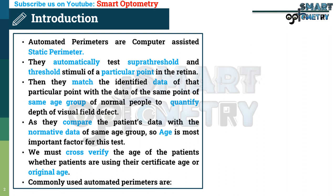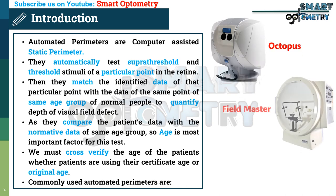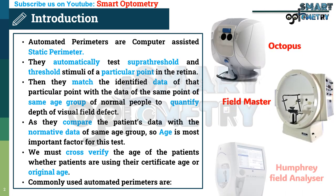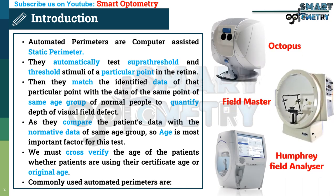Commonly used automated perimeters are Octopus, Fieldmaster, and Humphrey Field Analyzer.